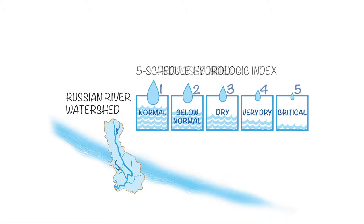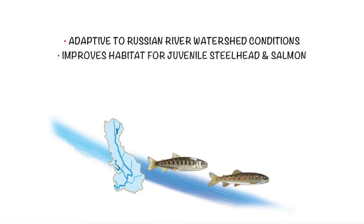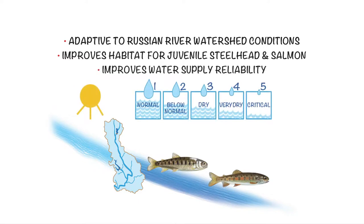The proposed hydrologic index has five flow schedules based on Russian River watershed conditions. The benefits of this are: it is more adaptive to Russian River watershed conditions, improves habitat for juvenile steelhead and salmon, and improves water supply reliability.